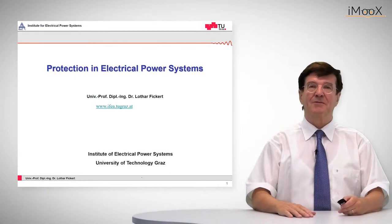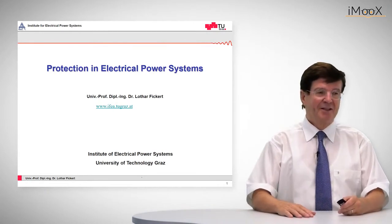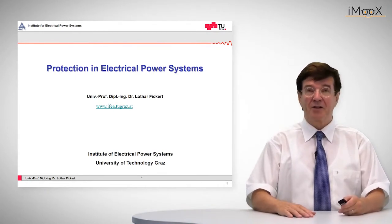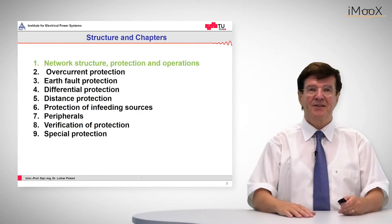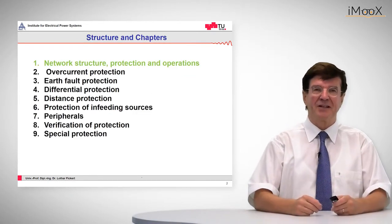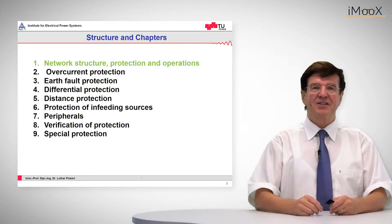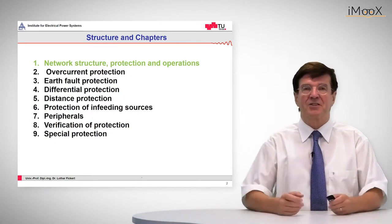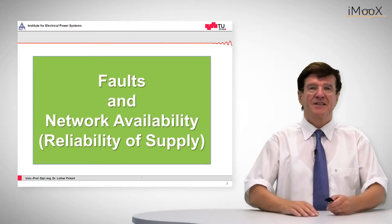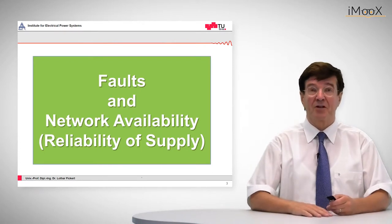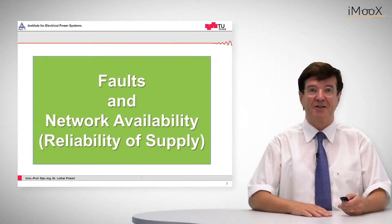Hello everybody and welcome to today's lecture about faults and network availability. These faults and the availability of a network can be assigned to the network structure, protection, and operations. It is about network availability, that means the reliability of supply.